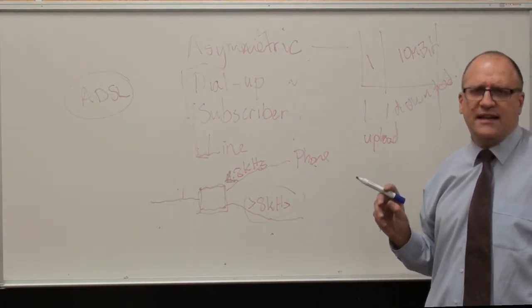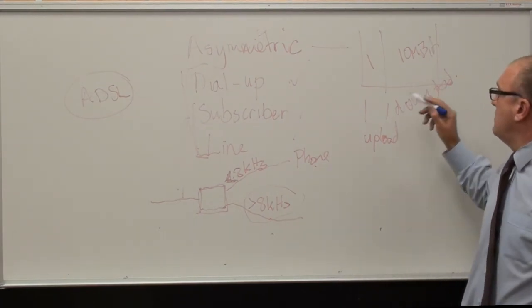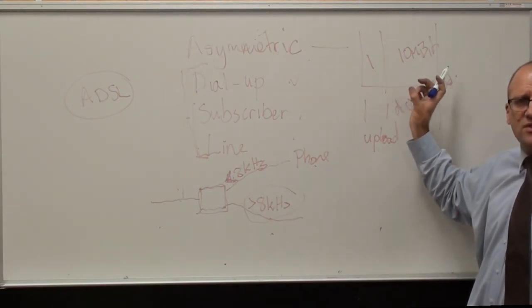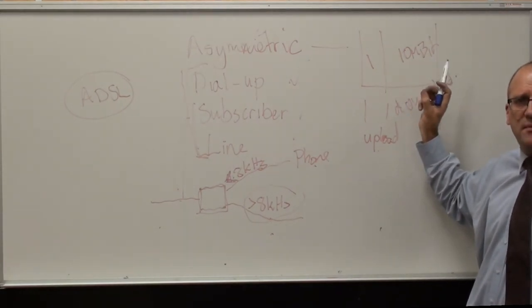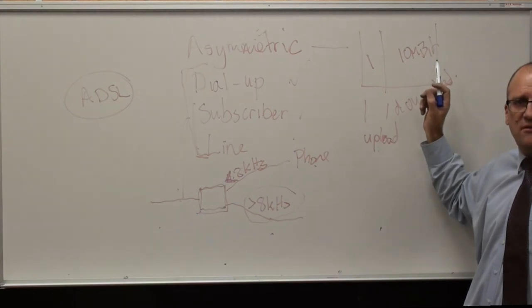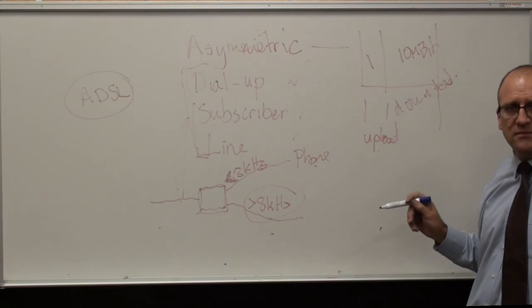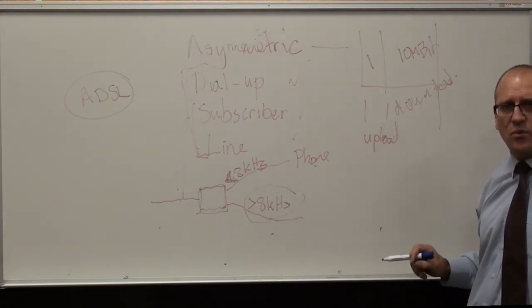You download a lot more on an internet connection than you upload. So your upload, they limited the range of frequencies, so you uploaded about 1 megabit per second if you needed, and your download was around 8 to 10 megabits a second. That's what ADSL stands for, that's the basics of how it works.